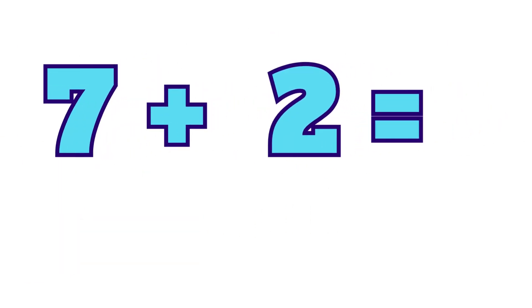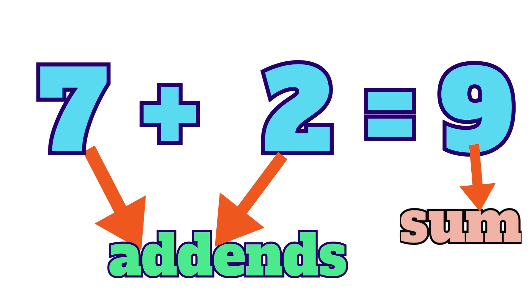And here we have an example of addition, seven plus two equals. In this equation, seven and two are called addends, and the answer is called the sum.